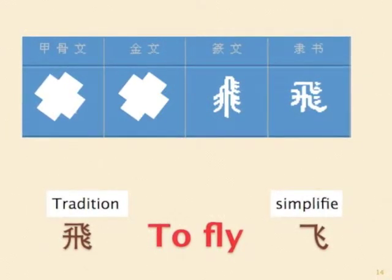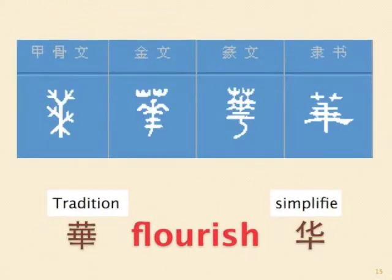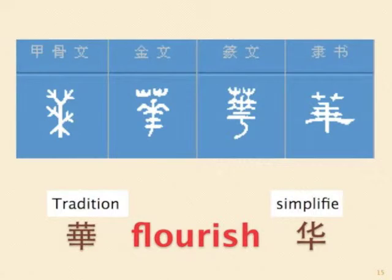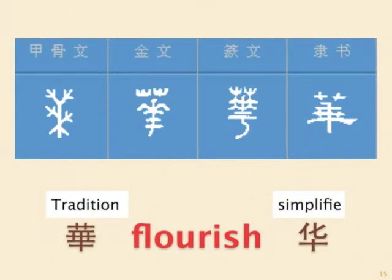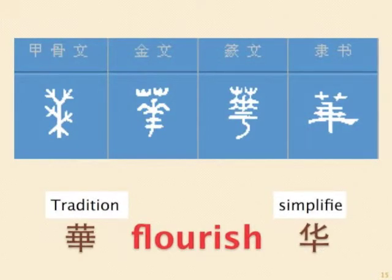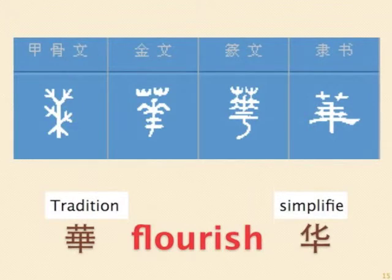Next word: flourish. The ancient word is the drawing of a tree with flowers. The traditional form basically keeps this shape with horizontal and vertical strokes. The simplified word replaces the upper part with the word 'hua', which means change.